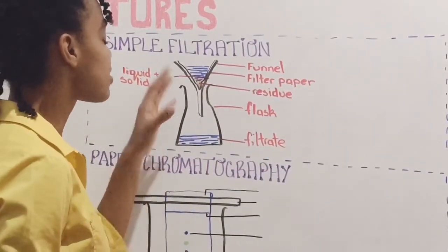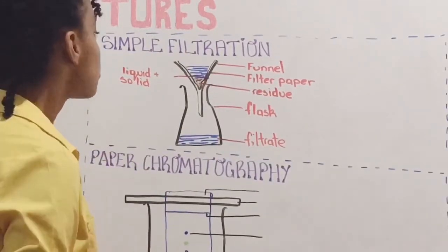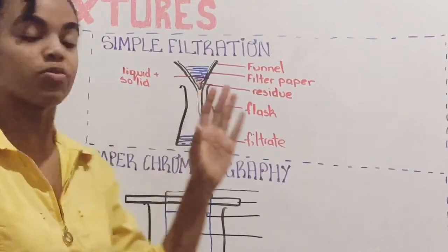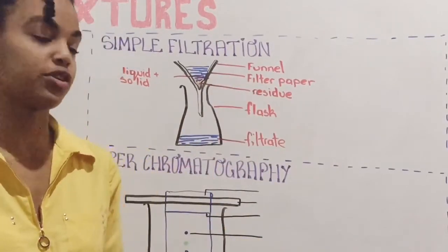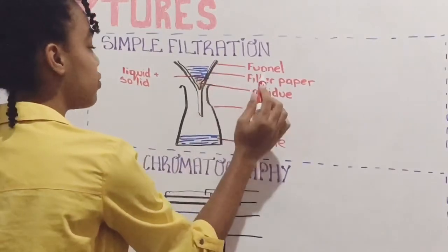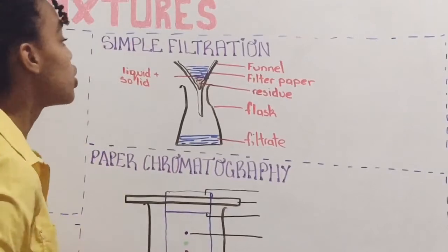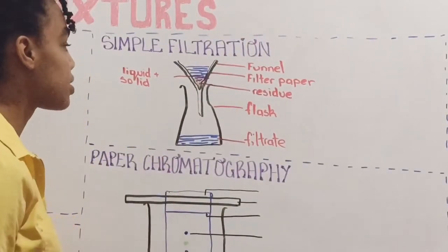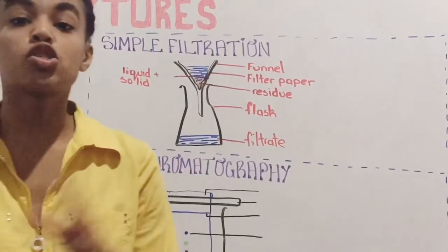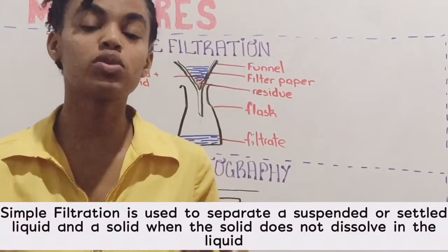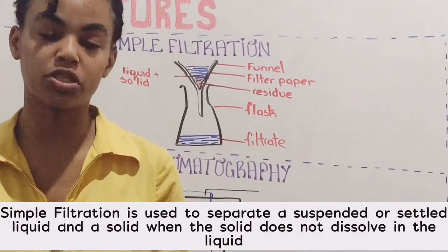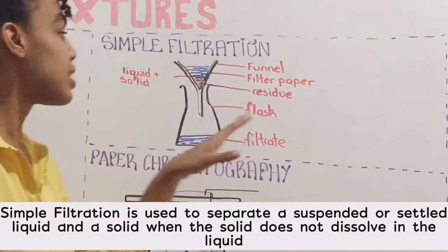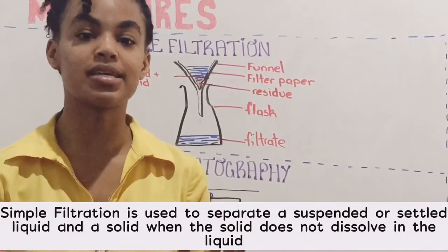So what we want to do right now is talk about what exactly happens during simple filtration. You're going to put your filter funnel over a conical flask and you're going to insert some filter paper inside your filter funnel. So we have our filter paper inside our funnel and the funnel is over the conical flask. You're going to pour your solid and liquid mixture inside the filter paper and you're going to watch the process take place. In simple filtration, we use this method to separate a liquid from a solid and liquid mixture. The liquid is going to pass through the filter paper and the funnel into the conical flask as the filtrate, and the solid is going to be left behind in your filter paper as the residue.